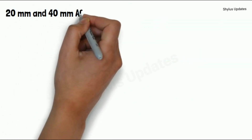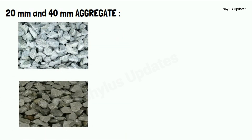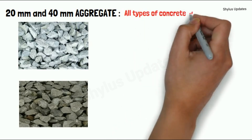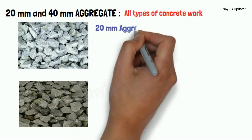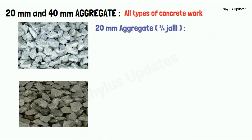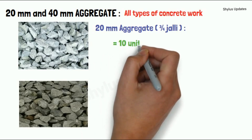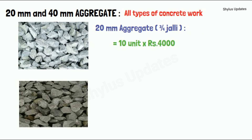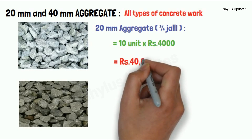20 mm and 40 mm aggregate. These aggregates are used in all types of concrete work. For a 700 square feet house, 10 units of 20 mm aggregate is required. The current market rate of 20 mm aggregate is Rs. 4,000 per unit. When you multiply 10 units into Rs. 4,000, you get Rs. 40,000.